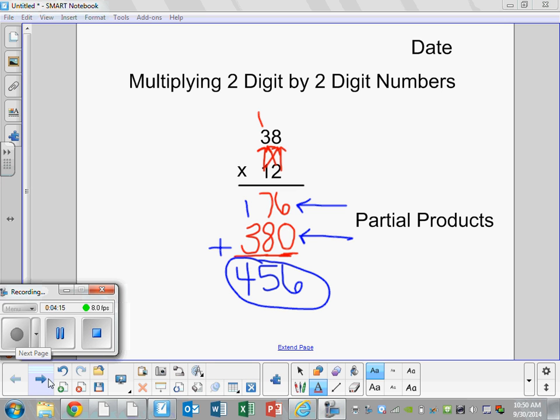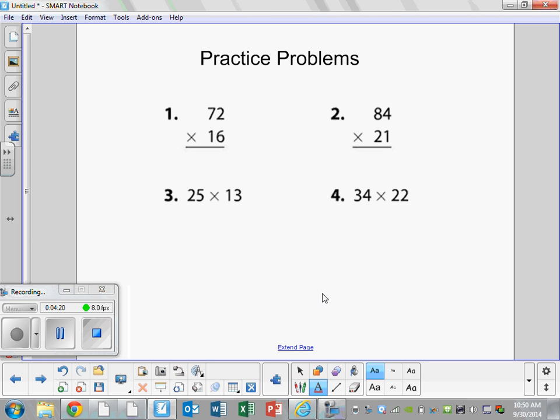Below your notes that you just took if you would please complete the following practice problems. 72 times 16, 84 times 21, they are already stacked and ready to go for you. Three and four you are going to have to stack these numbers so that your place values are in line. Tomorrow we will check the answers to these practice problems and see how everyone is doing.